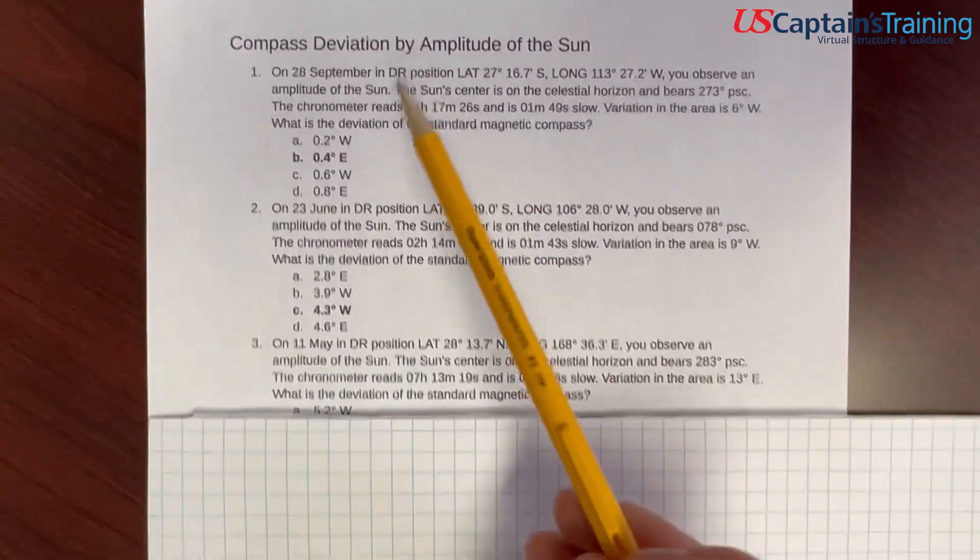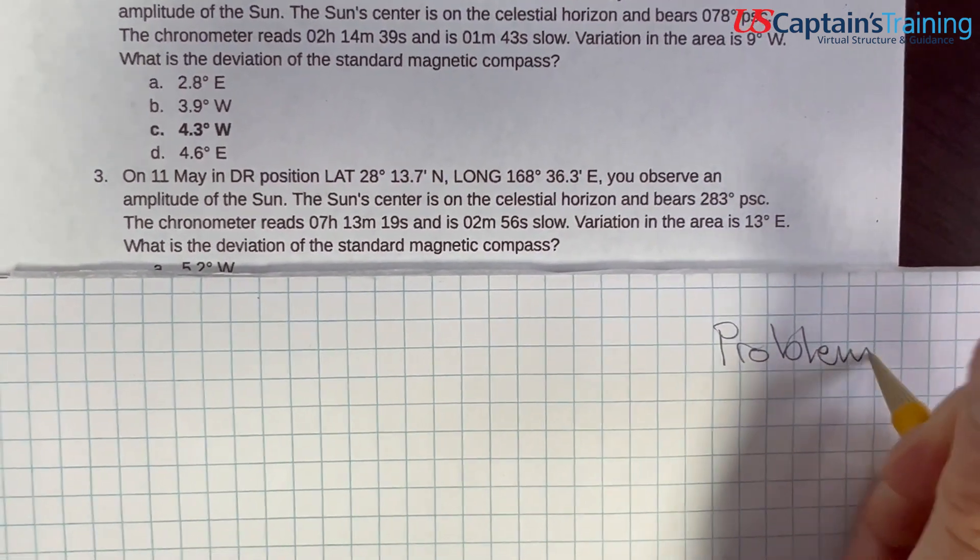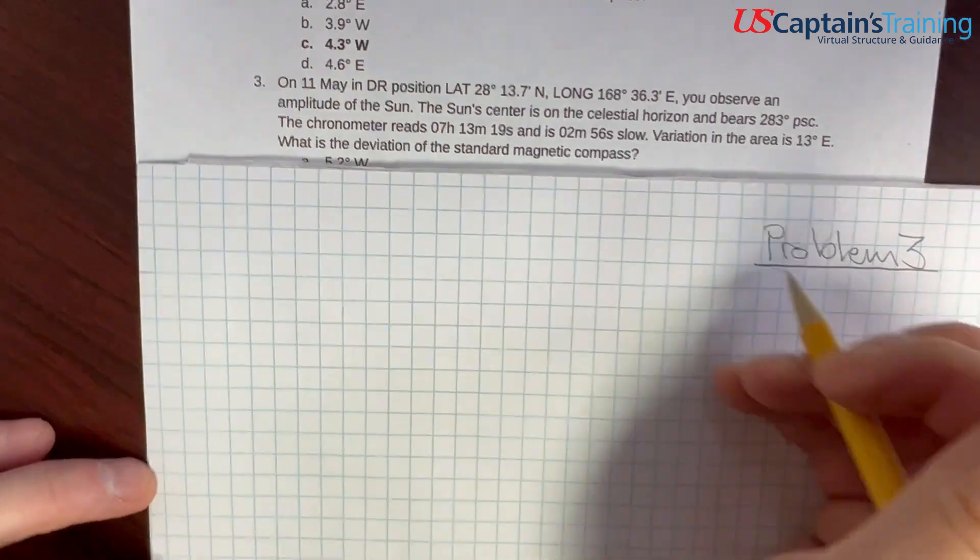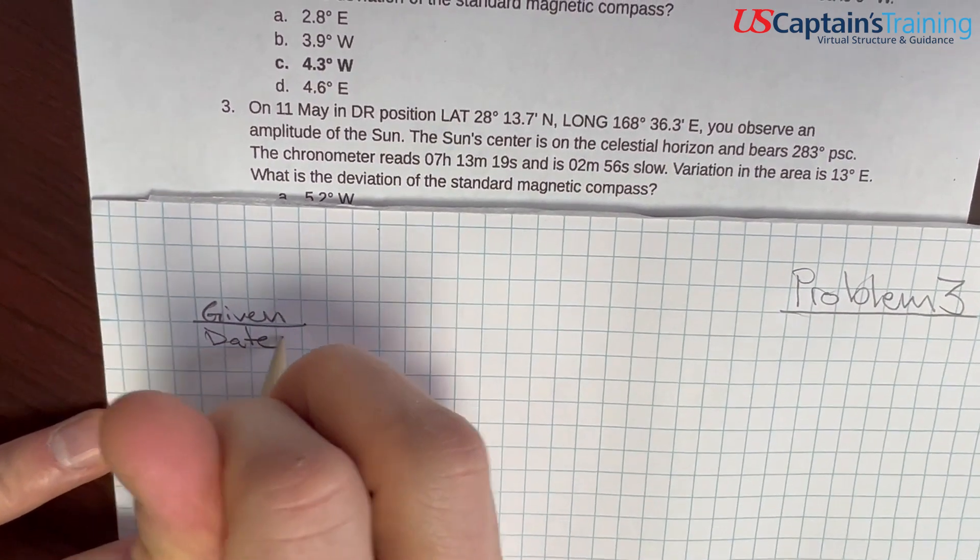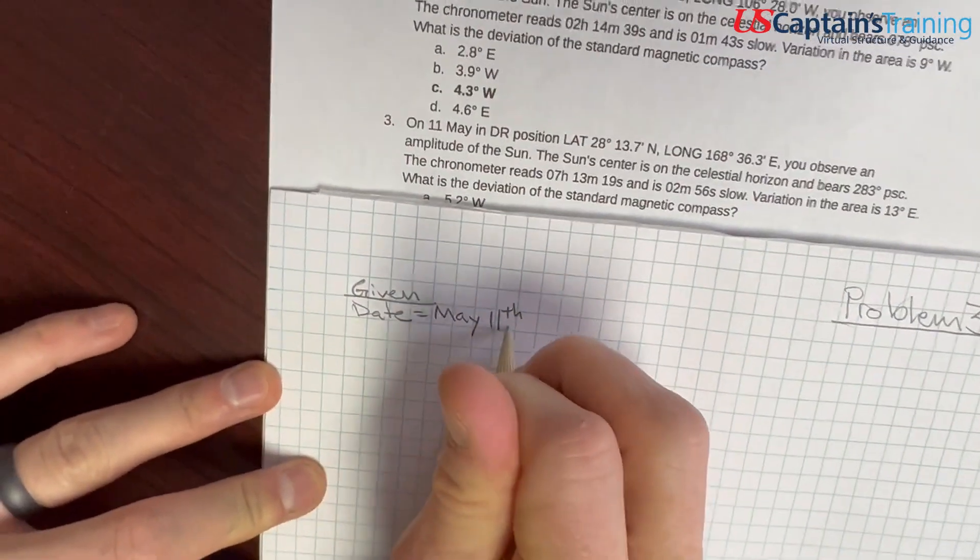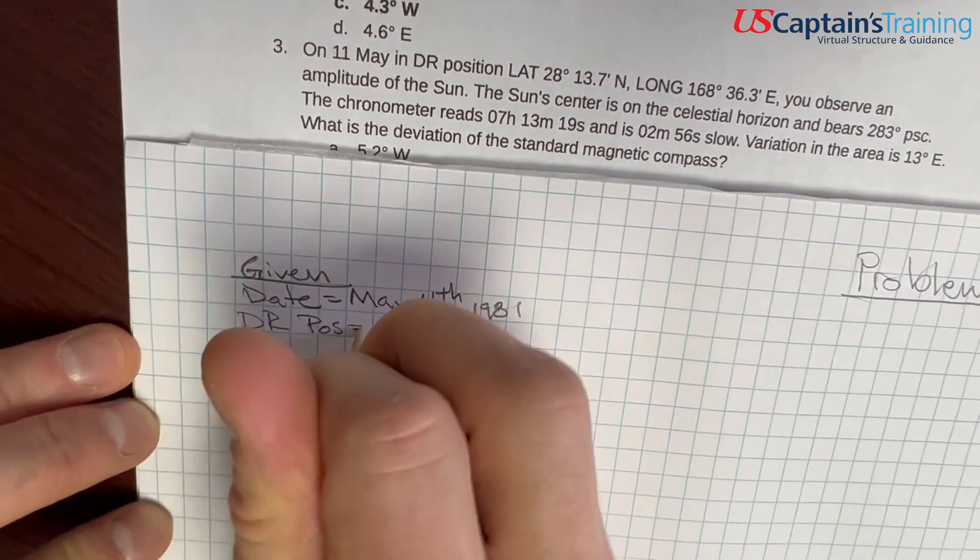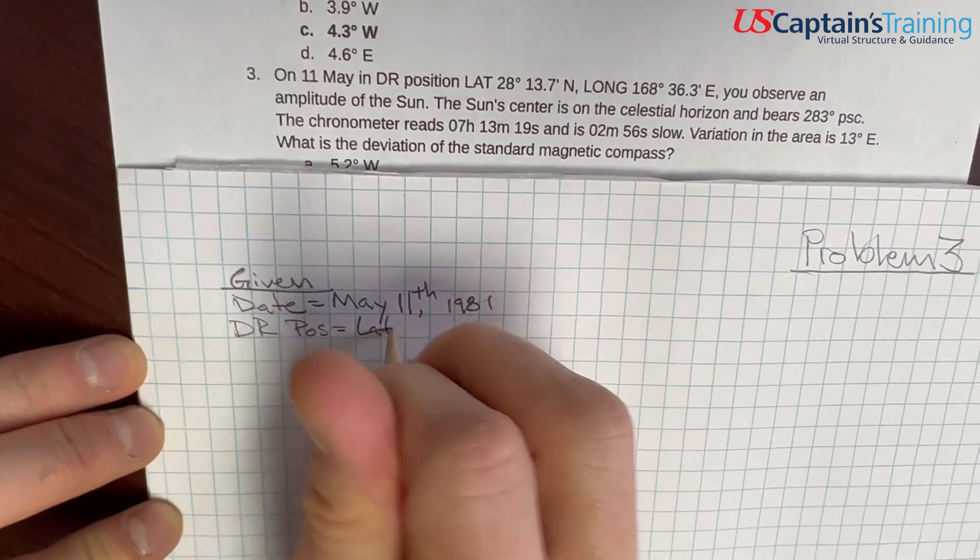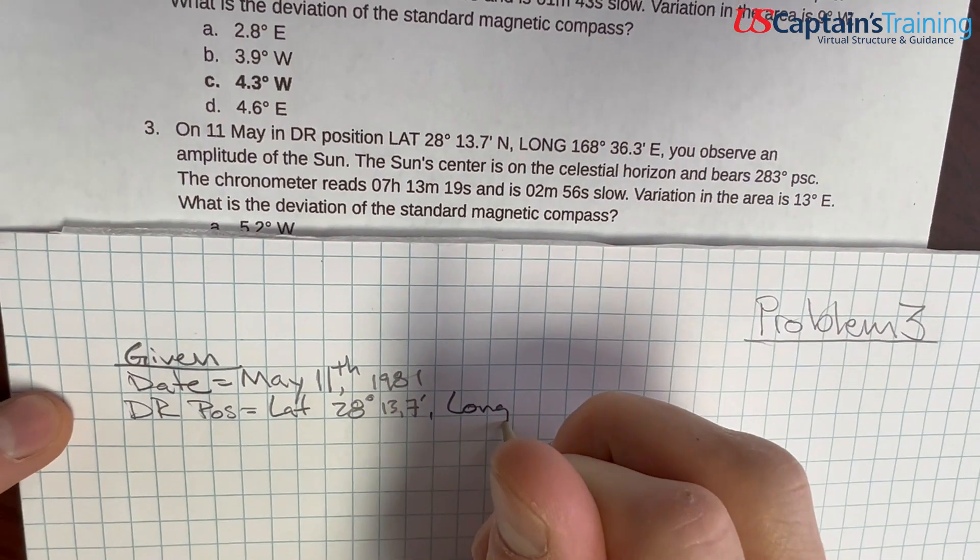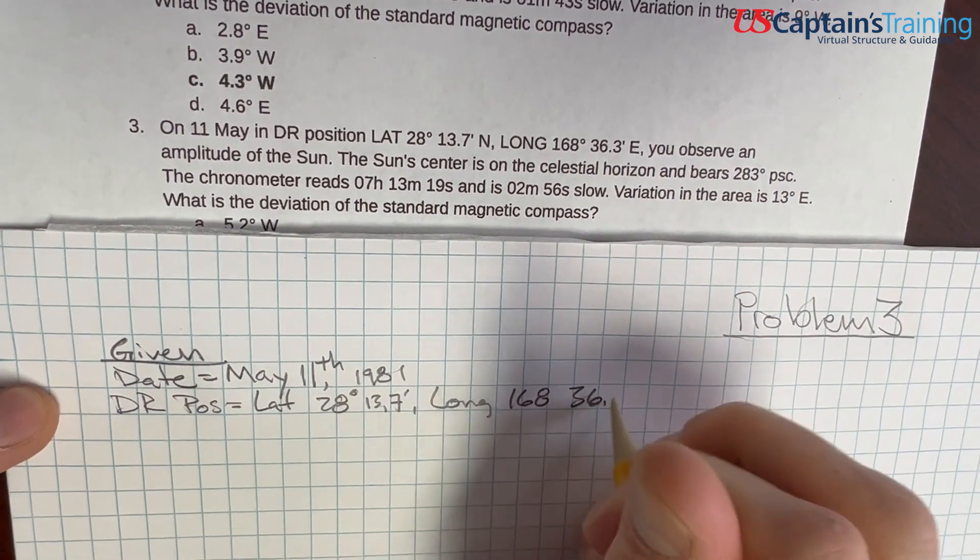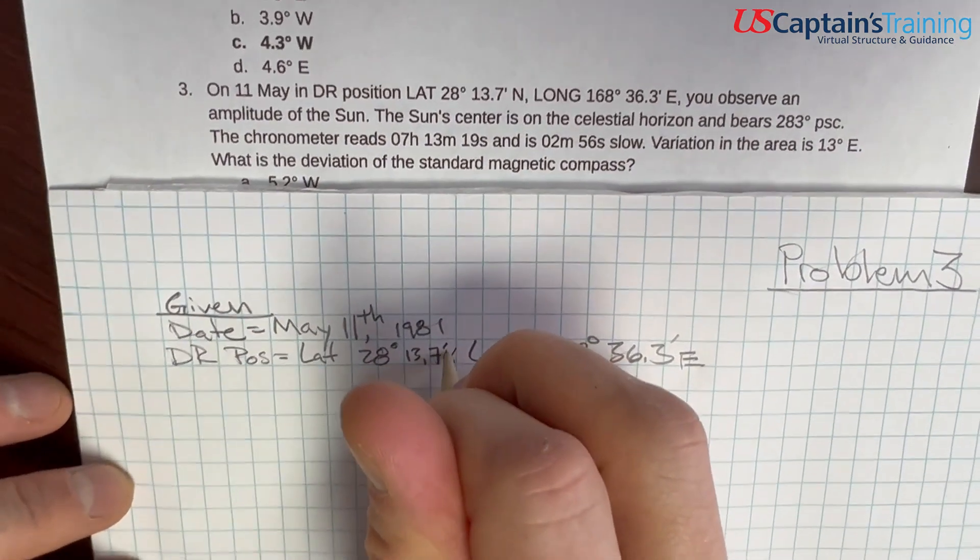Calculate compass deviation by amplitude of the sun, problem 3. Let's get this one going. We're going to get all the information given in the problem so we can refer to it later. First thing given is the date, May 11th, 1981. And it gives us our DR position. The DR position equals latitude 28 degrees 13.7 minutes north, and the longitude is 168 degrees 36.3 minutes east.